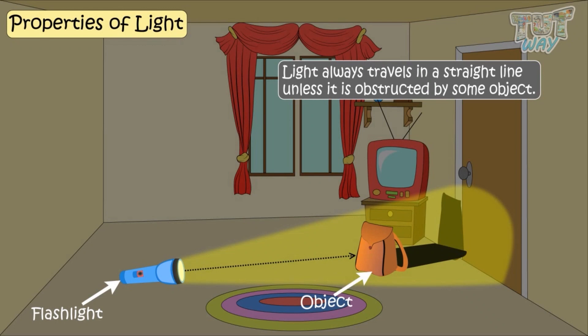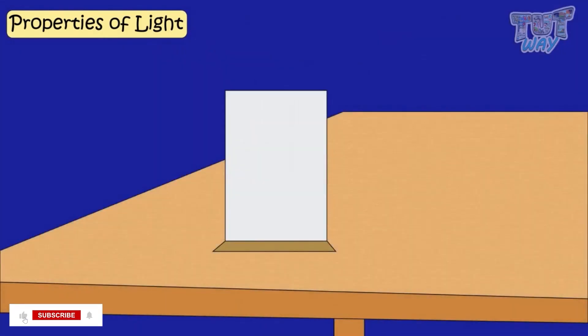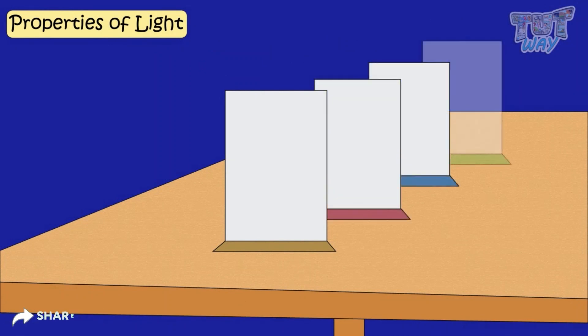Here is another way to demonstrate that light travels in straight lines. Take four or five papers, hold them one after the other at some distance like this.